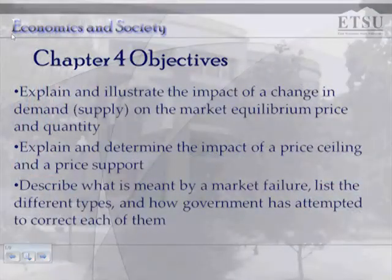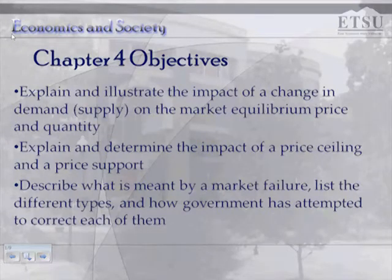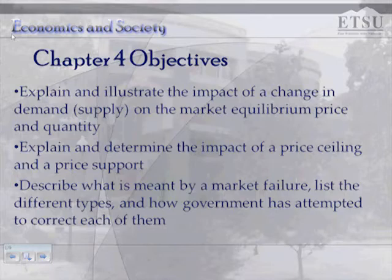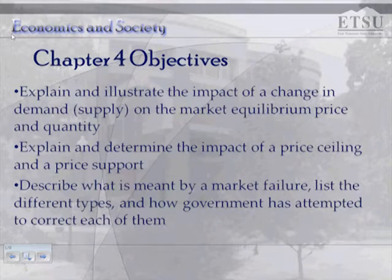Now that we have an idea of the price-quantity equilibrium, prices are determined by the interaction of buyers and sellers in a market. We want to explain and illustrate changes in demand and supply that result from non-price determinants, how those affect the market equilibrium price and quantity. We also want to explain the impacts of price controls — price ceilings or price floors — and describe what is meant by market failure and the role for government intervention in a market.